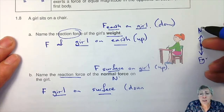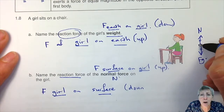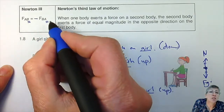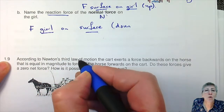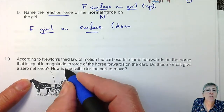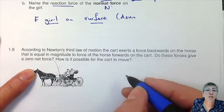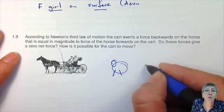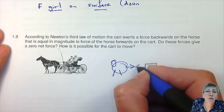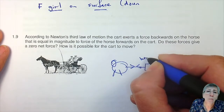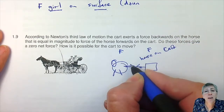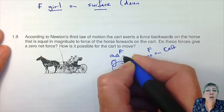Two forces acting on the same object can never be a Newton's 3rd pair — a Newton's 3rd pair acts on different objects. According to Newton's third law, the cart exerts a force backwards on the horse equal in magnitude to the force of the horse on the cart. If you've got a horse and a cart connected, horse on cart and cart on horse are equal. So the horse pulling the cart is equal to the cart pulling back on the horse.